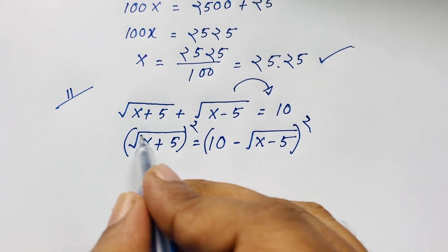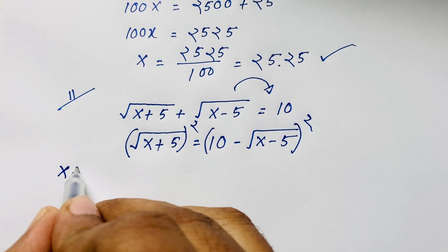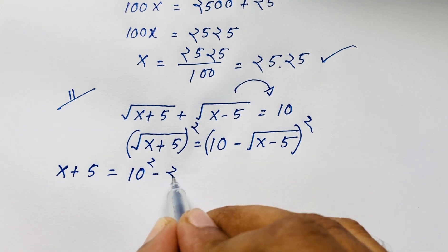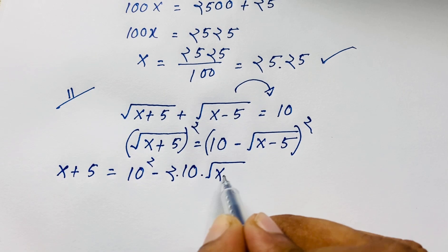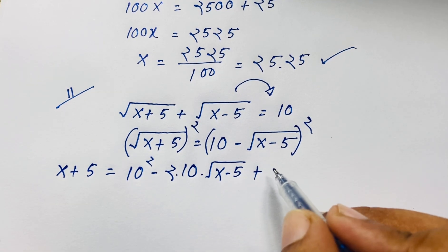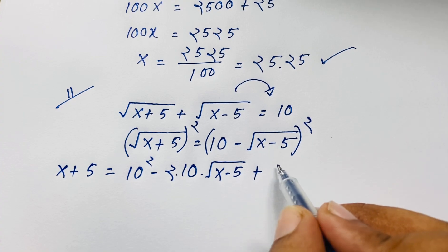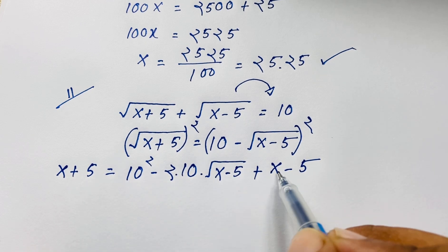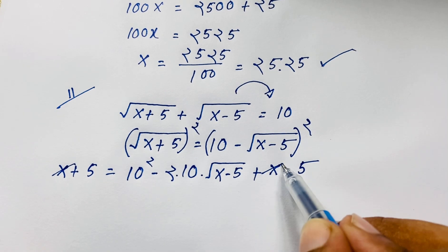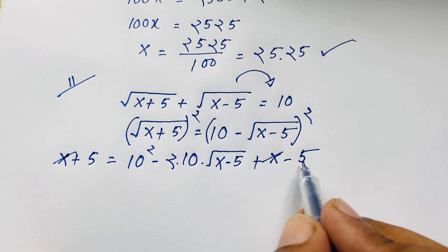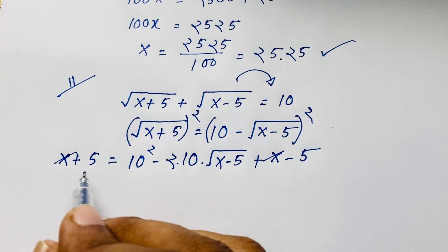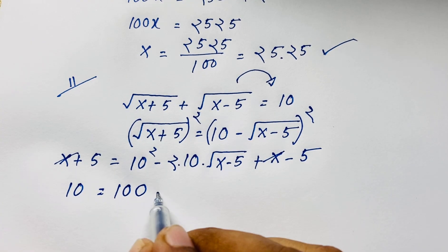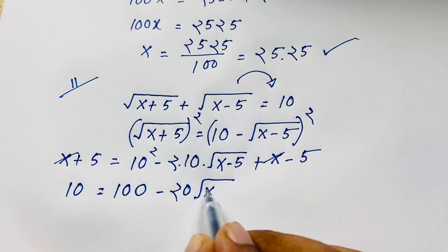Now I use both sides whole square. The square root is cancelled and we find x plus 5 on the left. Then this squared — the square root is cancelled — gives x minus 5, equal to the right side squared. x and x cancel. Moving terms, 5 plus 5 gives 10. And 10 squared is 100, minus 2 times 10 times square root of (x minus 5), giving minus 20 times square root of (x minus 5).